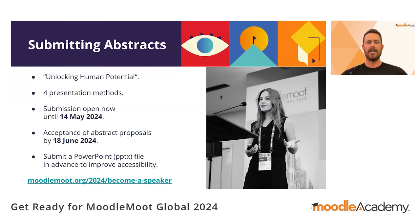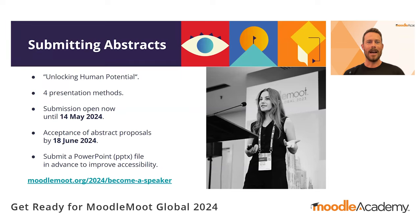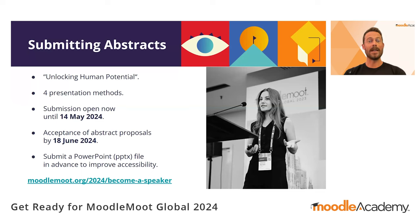On to submitting abstracts. This year's conference theme is Unlocking Human Potential, and we invite Moodlers from any educational, training or learning field to come together to learn from each other, share findings, brainstorm solutions and explore best practices. We'd love you to submit an abstract and be a presenter at the event. Abstract submissions are open now and close on May the 14th, which is literally only two weeks from today. We will let you know if your presentation has been accepted into the program by the 18th of June.